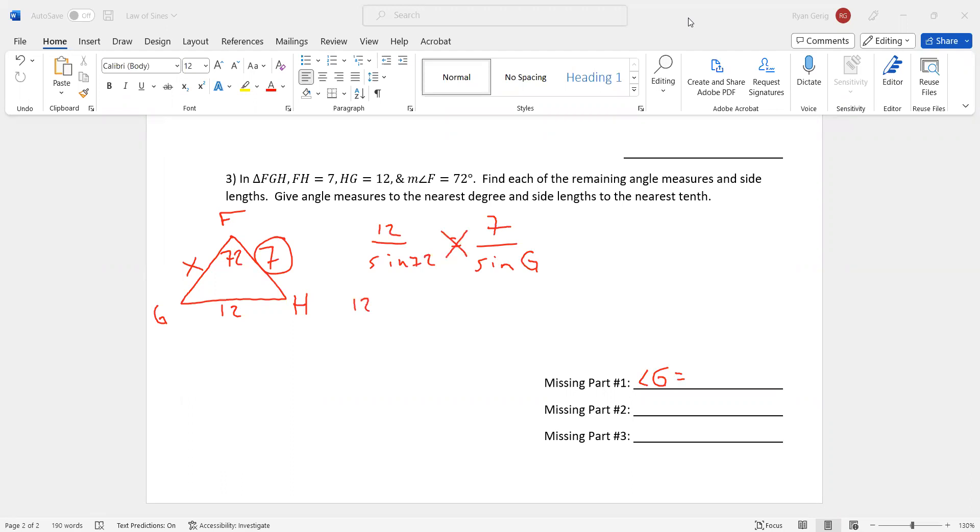So I get 12 sine G equals 7 sine 72 divided by 12. I get sine G equals all of that. By the way, try this first on your own and see if you get the right answer. That'll be a good indication if you need to ask me or not. And I am going to get 33.69. It says give angle measures to the nearest degree. So nearest whole degree is 34 degrees.